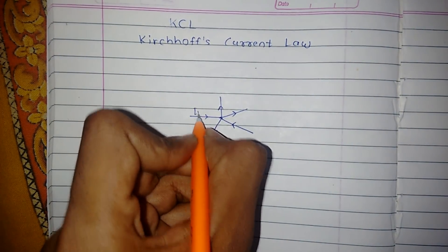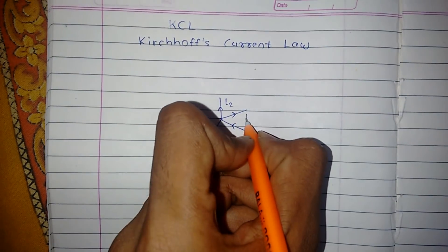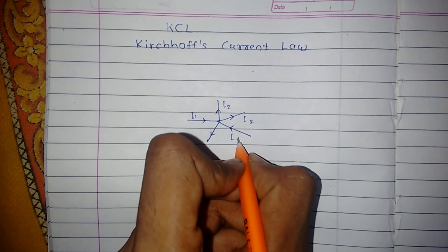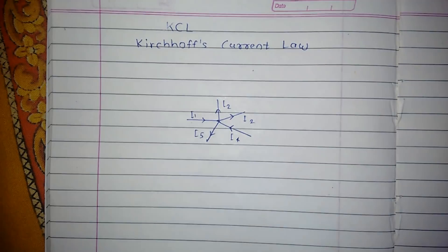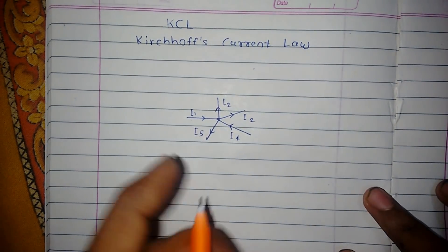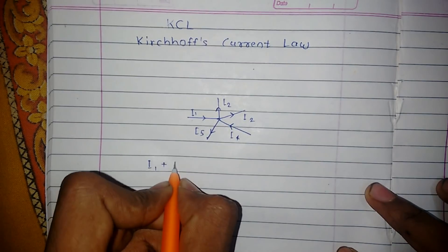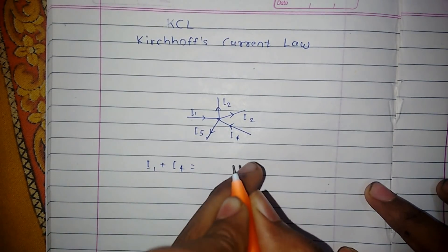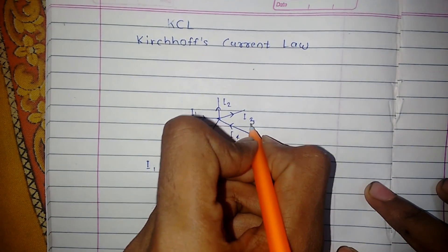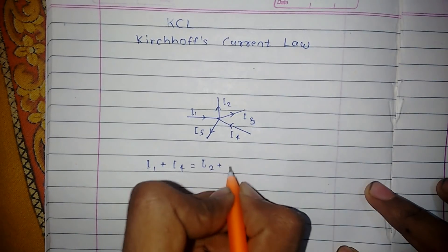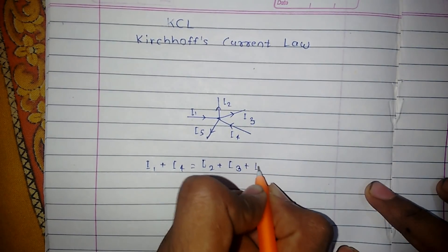Suppose this is I1, I2, I3, I4, and I5. Then according to KCL, incoming currents - that is I1 plus I4 - is equal to outgoing currents I2 plus I3 plus I5.